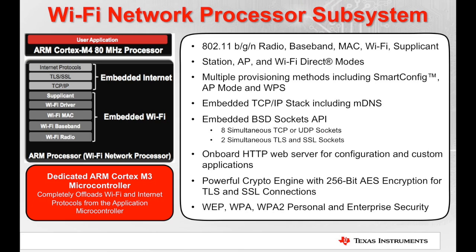It includes an embedded TCP/IP stack, which includes mDNS for discovery on iOS and Android devices. The Sockets API uses the industry standard BSD Sockets, which means you can use code and libraries for other internet protocols — many are freely available on the internet. It comes with an onboard HTTP web server where you can access configuration or develop your own applications on top. And should you wish to use HTTPS in your communication, this is provided by the Embedded Crypto Engine.